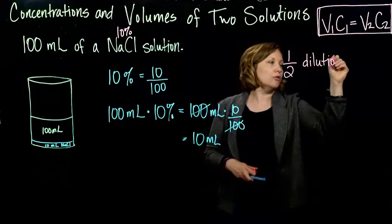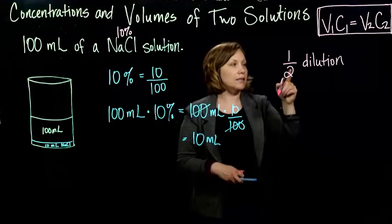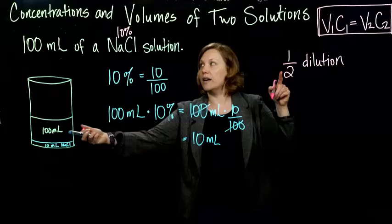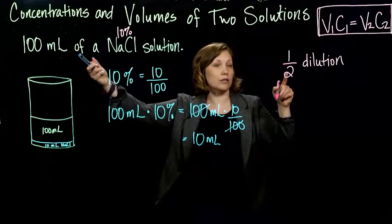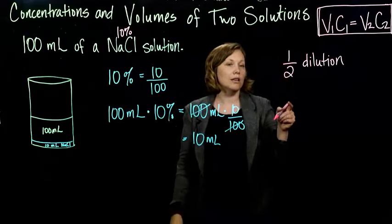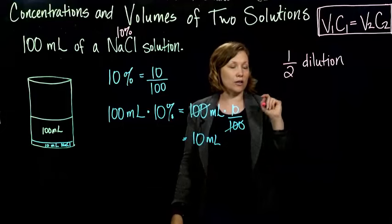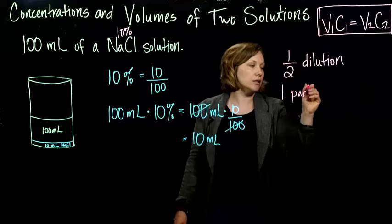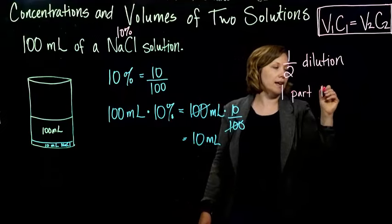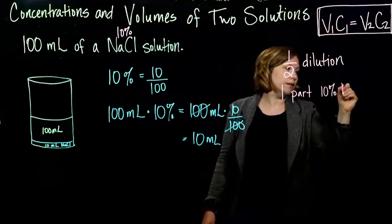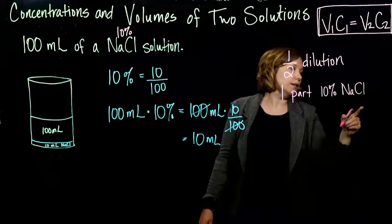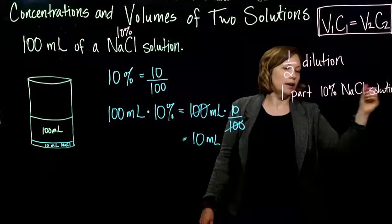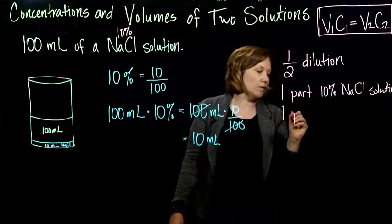So you can go through the calculations of this, right? That means I have one part sodium chloride of my sodium chloride, 100 milliliters of sodium chloride solution, to two parts total volume. So that means I'm going to add one part of my 10% sodium chloride solution. And let's say we're using water and one part water.